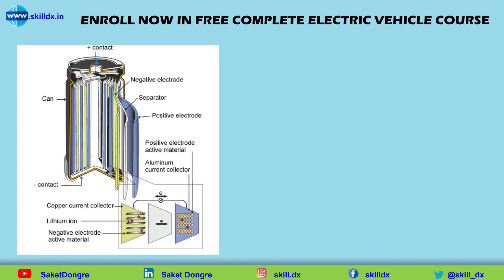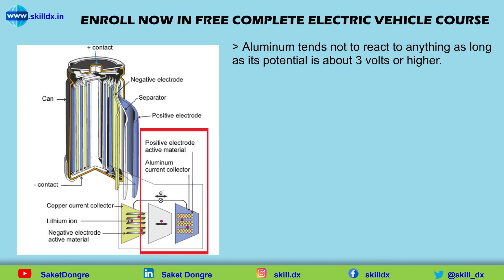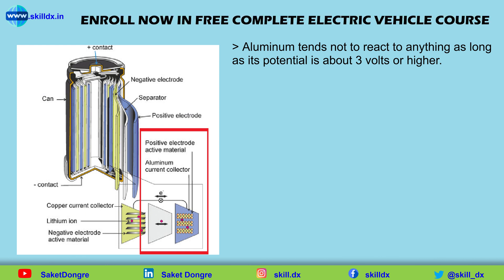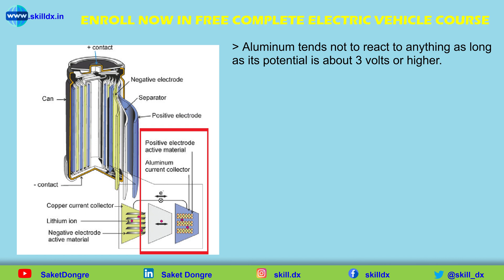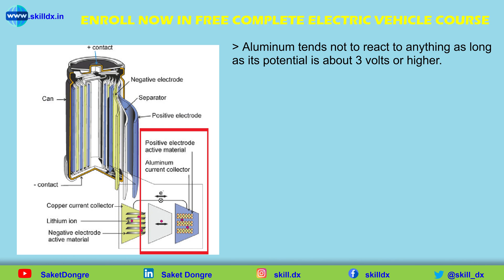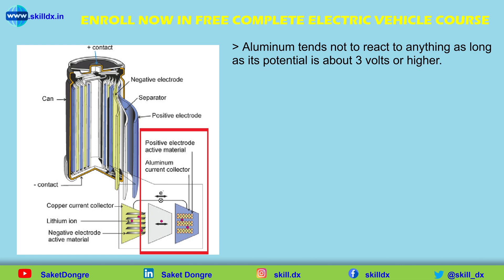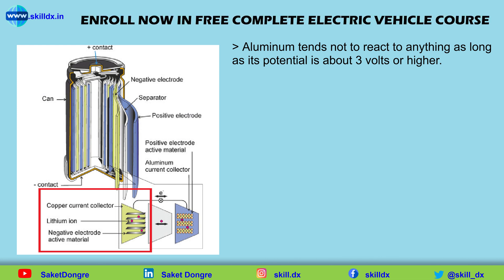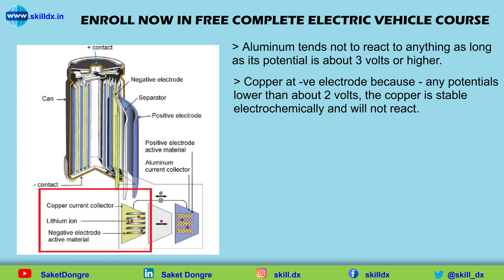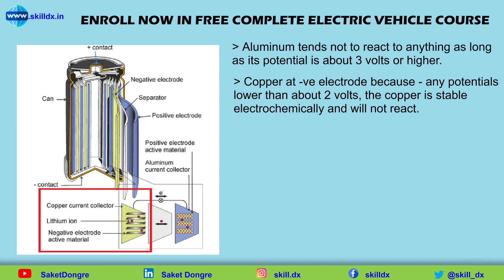Current collector materials are chosen very carefully so they will not be degraded by the interior chemical environment of the cell. In every lithium-ion battery cell, the positive electrode current collector is aluminum foil, chosen because aluminum tends not to react as long as its potential is about 3 volts or higher. The positive electrode active materials are chosen to have higher potential, so in normal operating conditions they will not react with the aluminum. In the negative electrode, the current collector is almost always copper foil, which is stable electrochemically at potentials lower than about 2 volts and will not react.